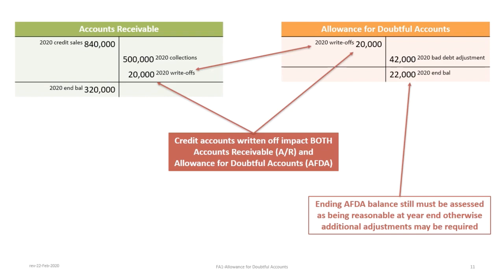Here's a summary of what happened. At the end of 2020 we have an accounts receivable balance of $320,000 and an allowance for doubtful accounts balance of $22,000, because the write-offs of $20,000 were debited to the account and then we had a credit of $42,000. The allowance for doubtful accounts usually carries a credit balance, and write-offs impact both accounts receivable and the AFDA.